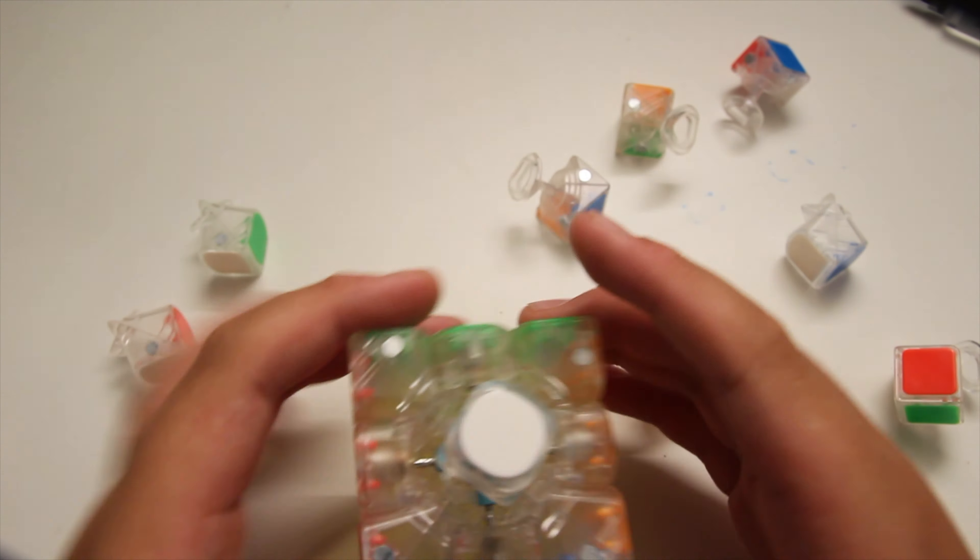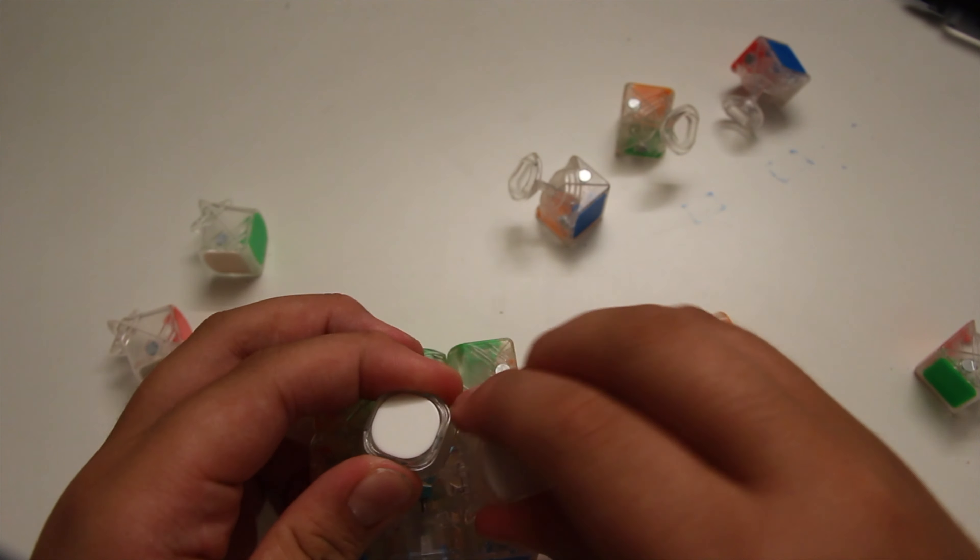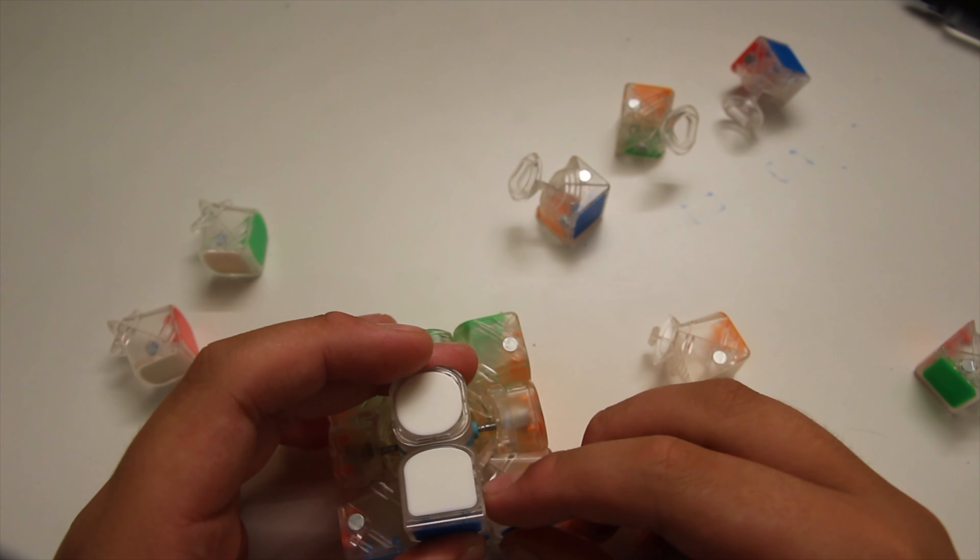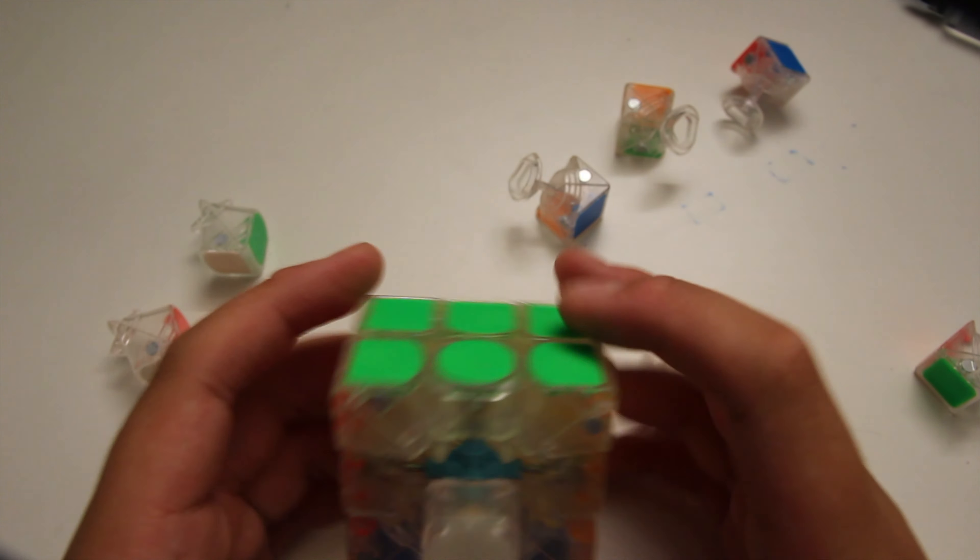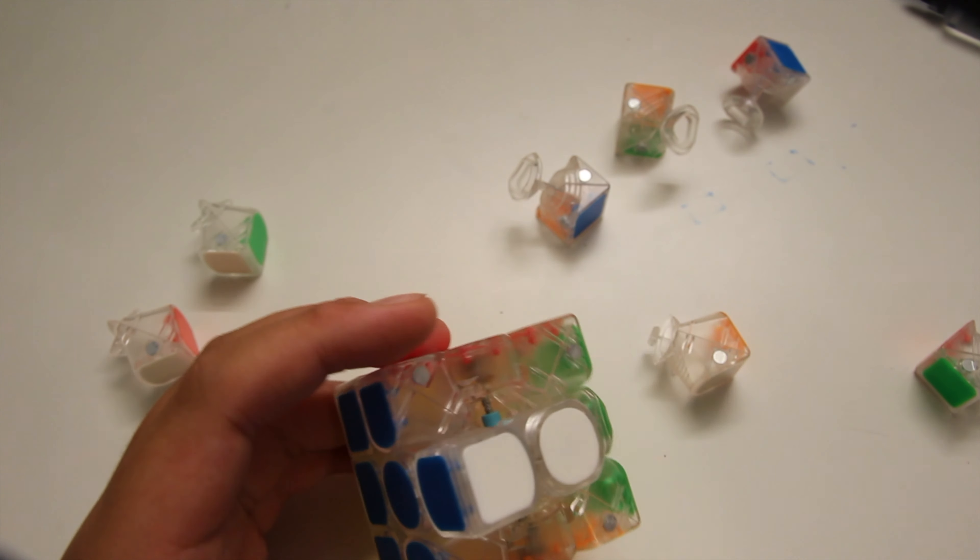These blocks are very essential and make assembling it way easier. Once you finish what in CFOP you would call F2L, you put one more edge in. This should be fairly easy. If it feels too tight, then you might have to loosen it.